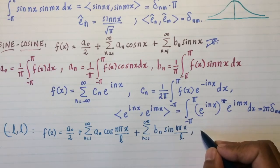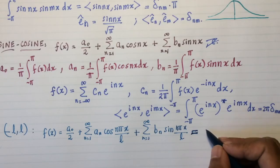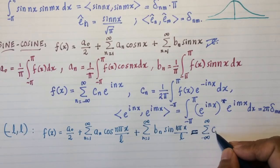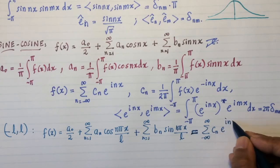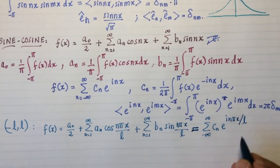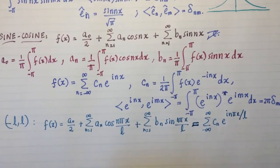And then if you want to write it in complex form, then this is going to be equal to the sum from -∞ to ∞ of c_n e^(inπx/L). So in this manner, you can do that.